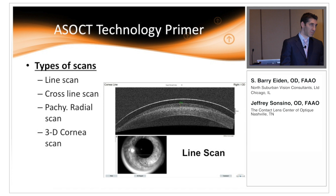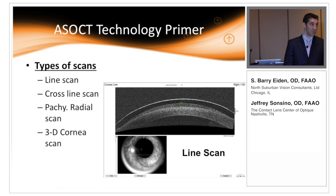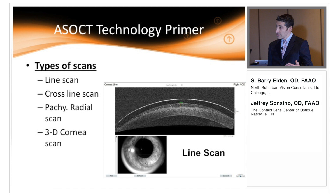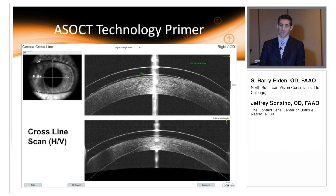Most of you who are already using OCT probably know that the mainstay scan is a line scan — a very quick one-dimensional scan that gives you a real-time cross-sectional view of a vaulting lens on the cornea. We use line scans and also cross line scans, which we're going to go over in the next couple slides. Barry is going to talk about radial scans and 3D corneal scans as well.